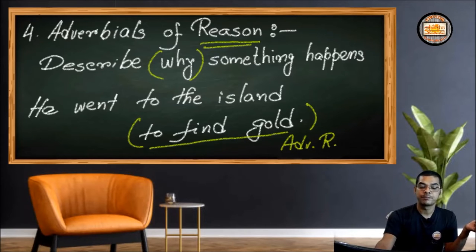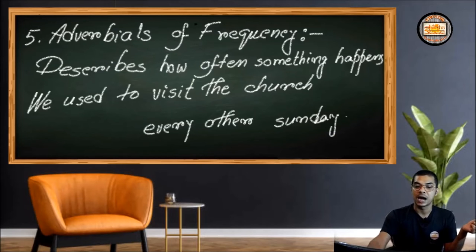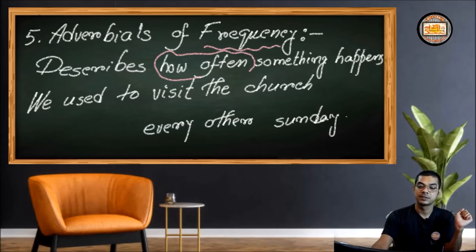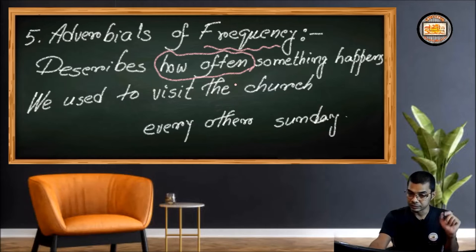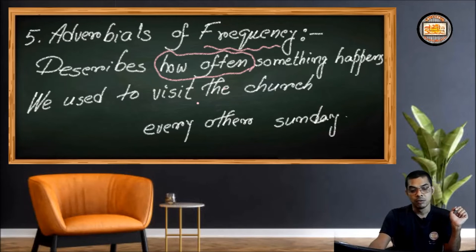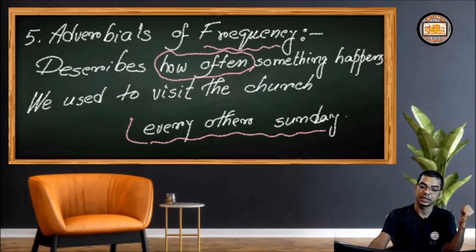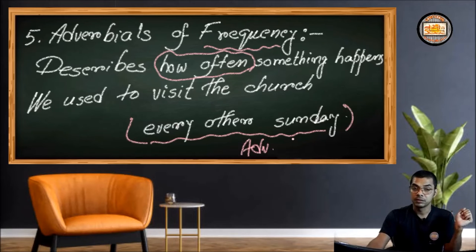The fifth type is adverbials of frequency. Though it's time-related, it describes how often something happens. For example: 'We used to visit the church every other Sunday.' How often did we visit the church? The answer is 'every other Sunday.' So this is an adverbial, and this adverbial speaks of frequency — it is an adverbial of frequency.